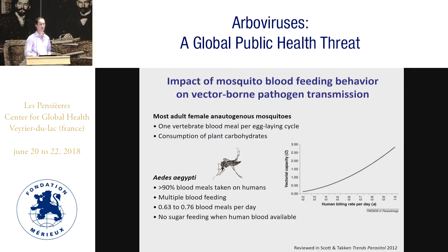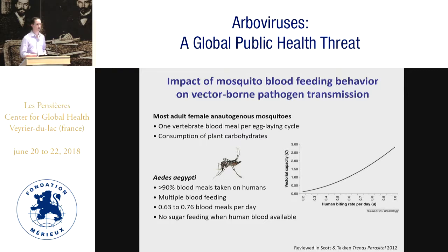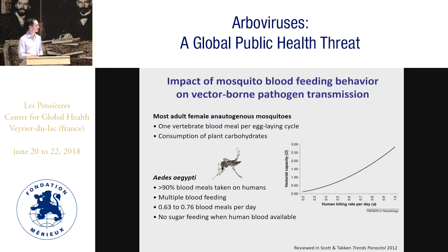It is also well known that the biting rate of mosquitoes is a critical determinant of vector-borne pathogen transmission. Most female mosquitoes take a single blood meal per egg-laying cycle. Aedes aegypti, in contrast, takes more than 90% of its blood meals on humans and engages in multiple blood feeding — more than one blood meal per egg-laying cycle. It was estimated in Puerto Rico and Thailand that Aedes aegypti takes 0.63 to 0.76 blood meals per day and doesn't feed on sugar as long as human blood is available. Because the human biting rate relates to vectorial capacity in a nonlinear way, a mosquito that bites humans very frequently will have a very high vector capacity.